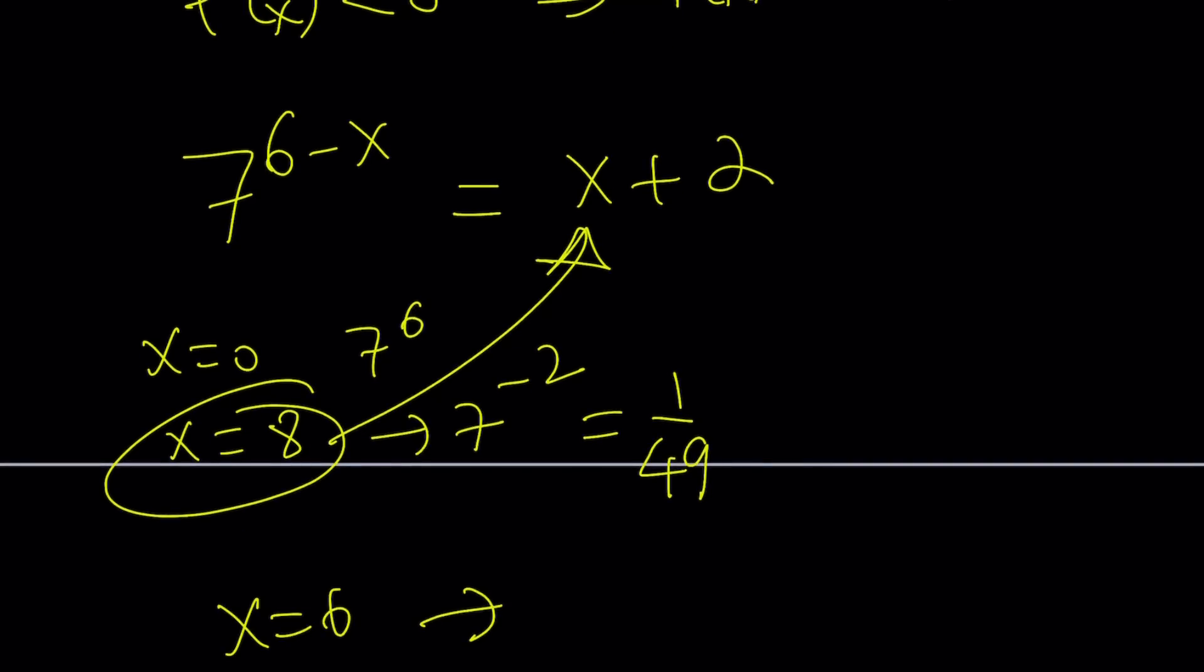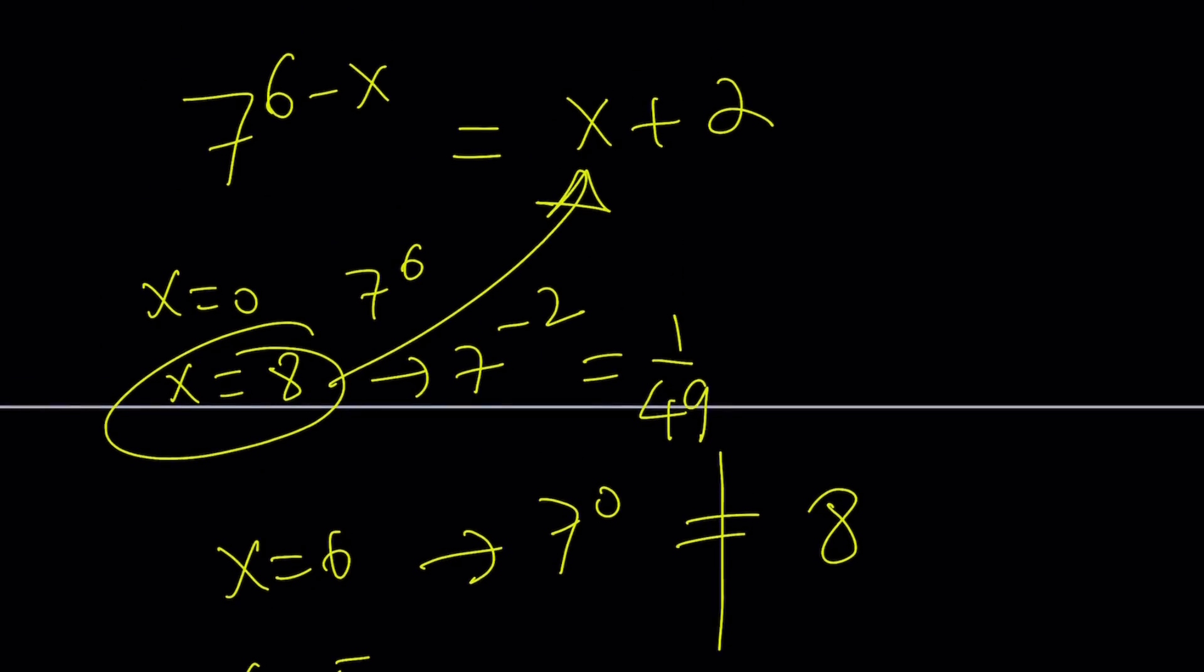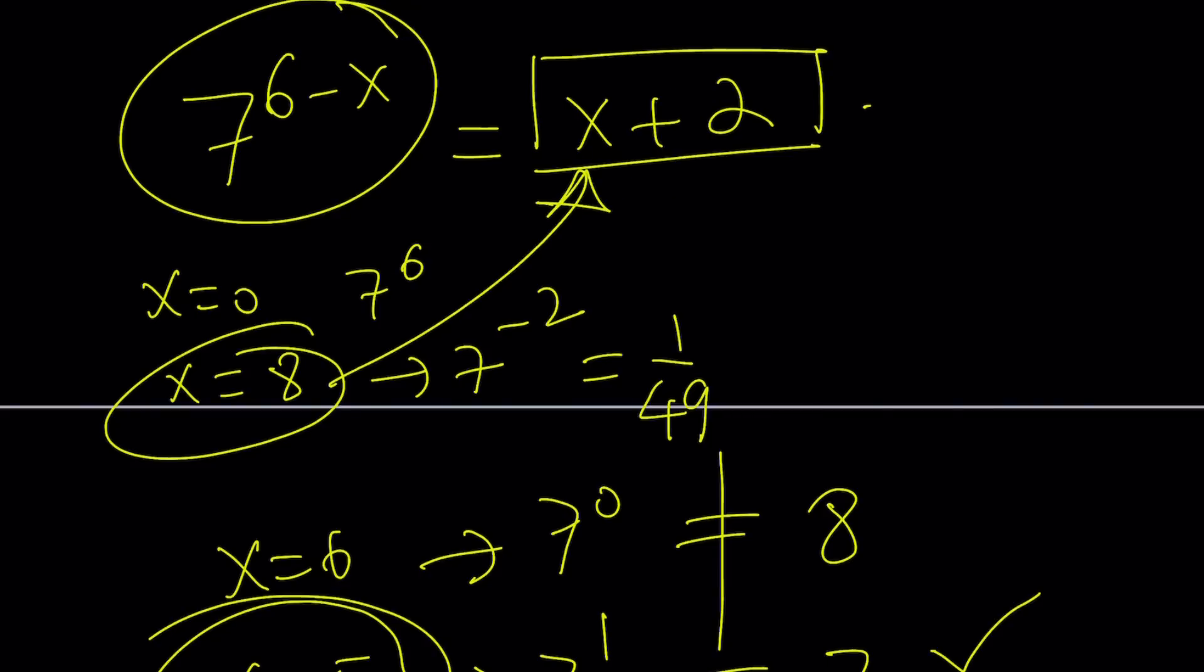How about x equals 6? Does that work? x equals 6 gives me 7 to the power of 0 on the left-hand side. And on the right-hand side, it gives me 8. They're not equal. So, that doesn't work. What about x equals 5? x equals 5 gives me 7 to the power of 1. And on the right-hand side, I get 7. And they're equal. Yay! We got the value by guessing and checking, right? But here's one thing that I want you to think about. If you're looking for integer solutions, obviously, you have a power of 7. Maybe this is going to equal 7. I'm just thinking, right? And then x must be 5. And that works. And that's it.